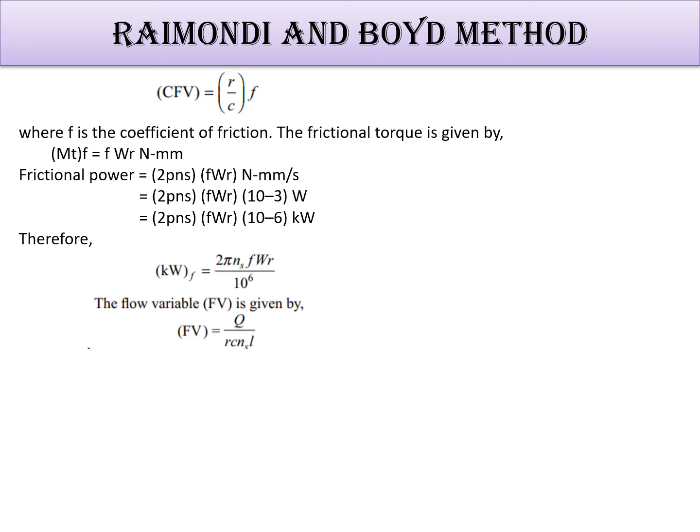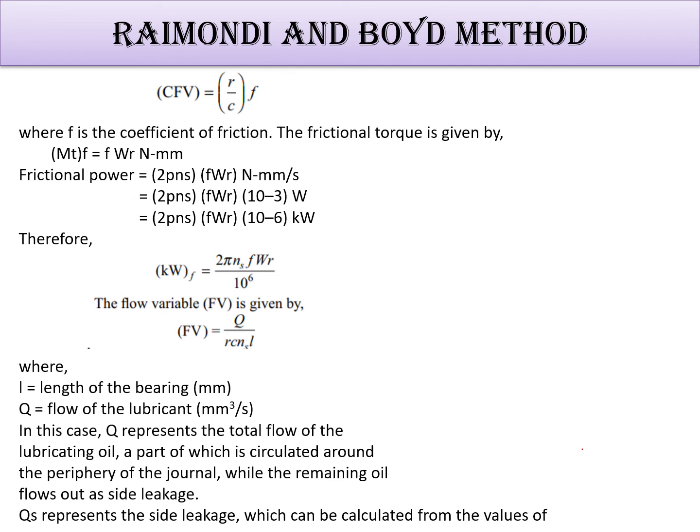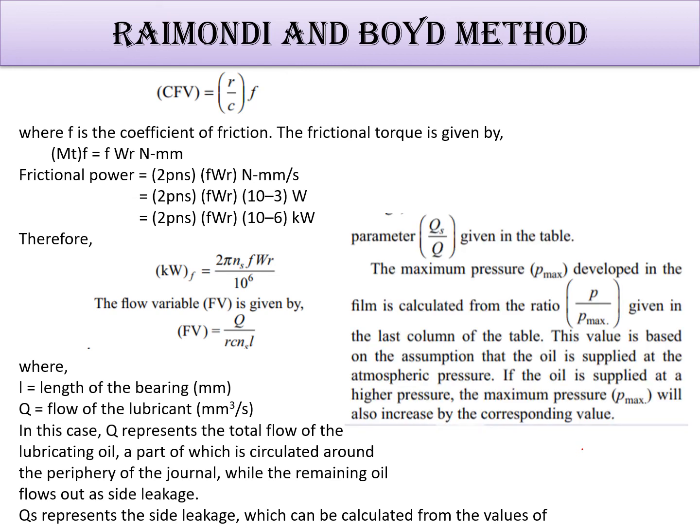The flow variable FV is given by FV equals Q upon rcnl. So the parameter Qs by Q is given in the table.